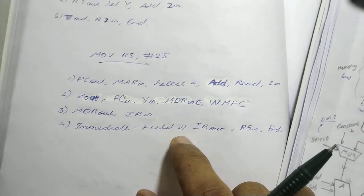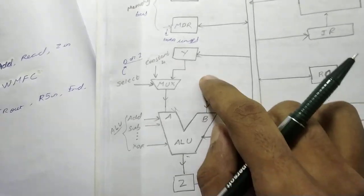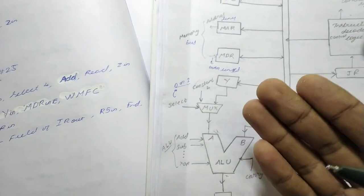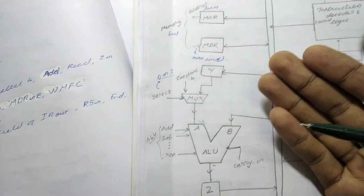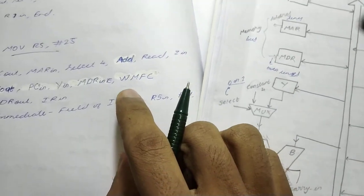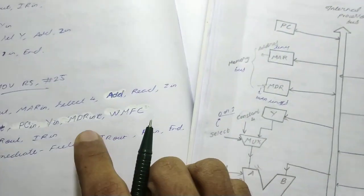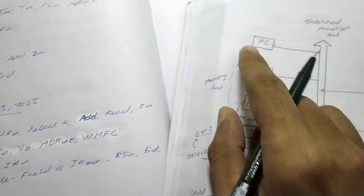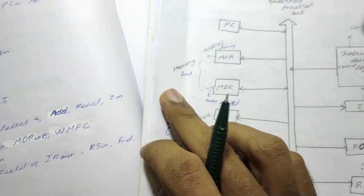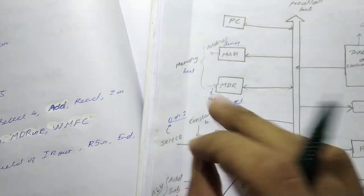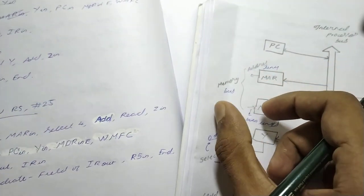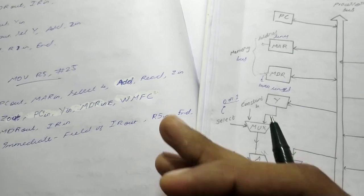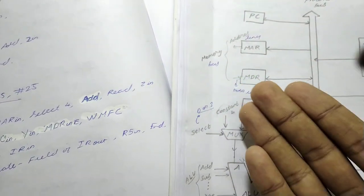We do PC in, so we take the incremented PC value and store it back into PC — the PC is now officially incremented. We also do Y in, keeping that same incremented value of PC in Y. We will understand why we do this when we see the branch instruction. We also have MDR in E — the memory fetch is being done right now due to the Read instruction — so MDR in E is for copying the instruction, which is the MOV instruction coming into MDR. We also wait for memory function to complete.